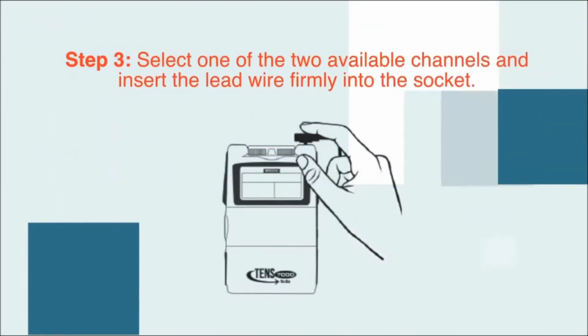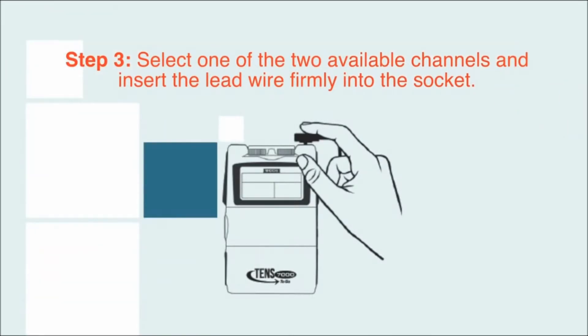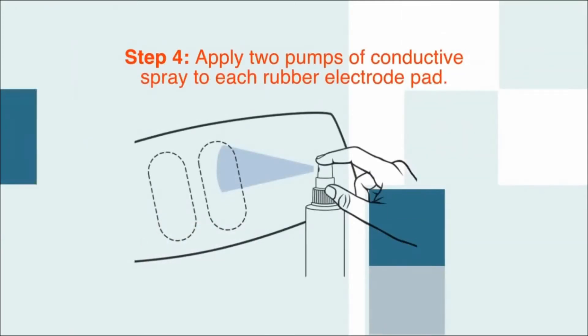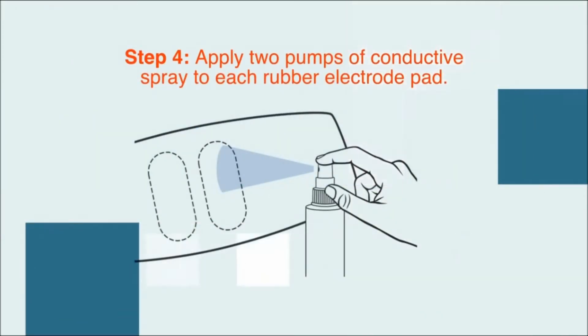Now, insert the lead wire firmly into one of the two available channels. Apply two pumps of conductive spray to each rubber electrode pad.